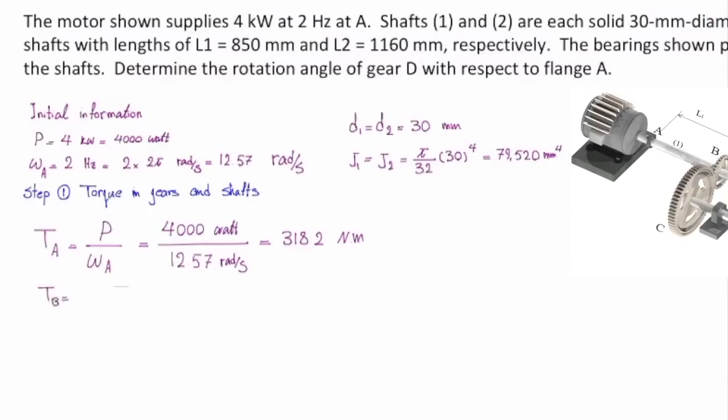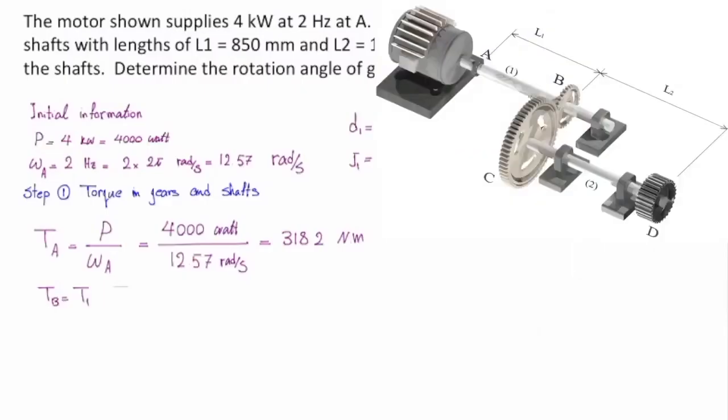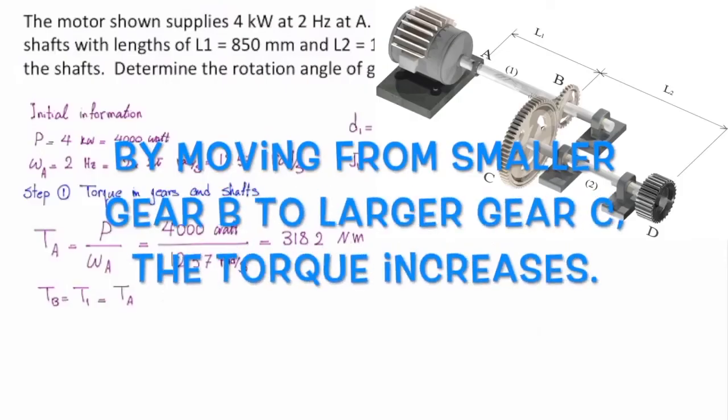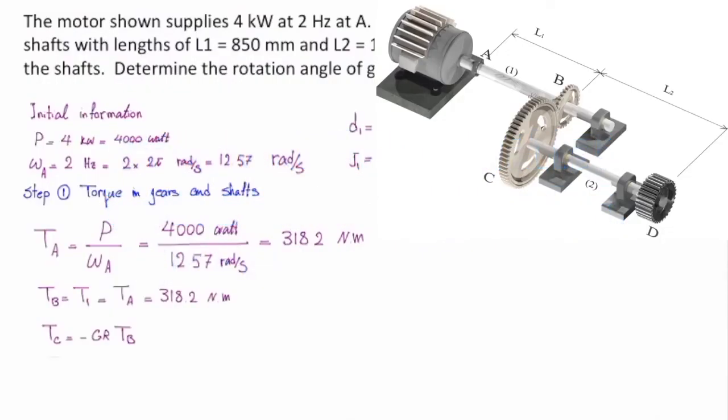How much would be the torque in the gear at B? Same. How much would be the torque at gear at C? I have to use the gear ratio. So the torque increases or decreases. When we are moving from smaller gear at B to larger gear at A, the torque increases. So the gear ratio that I have to use in this equation is 54 divided by 36. And that gives me negative 477.3 Newton meter. That is torque at C. How much would be torque at D for shaft 2? That would be the same. I'm moving along a shaft. All right. We have determined torque in these two shafts. Shaft 1 and shaft 2.